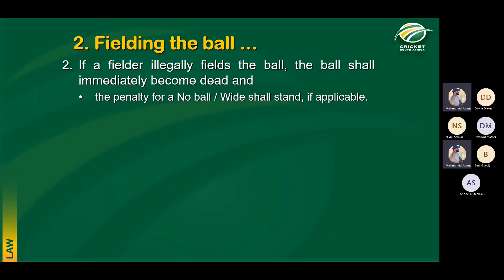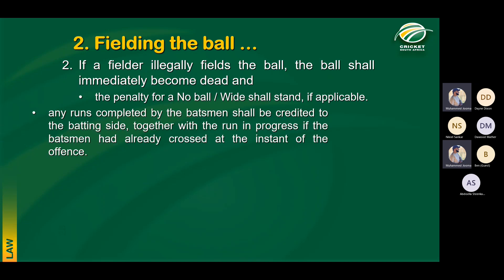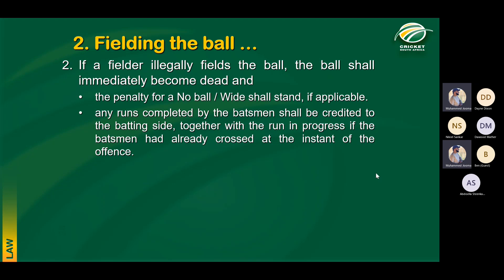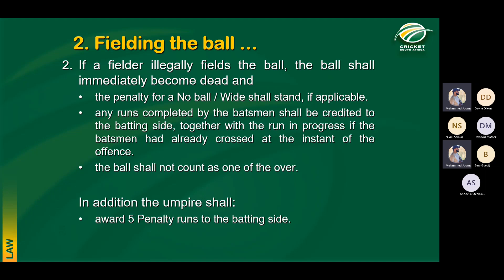Penalty for illegal fielding: the ball shall immediately become dead. Any penalty for no ball or wide shall stand. Any runs completed by the batsmen shall be credited to the batting side together with the run in progress if they had already crossed at the instant of the offense. The ball does not count as one of the over. In addition, the umpire shall award five penalty runs to the batting side and follow the reporting procedures of the union.